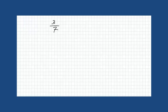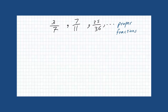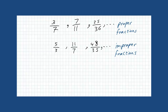Fractions like 3 over 7, 7 over 11, and 25 over 36 are called proper fractions because the numerator is less than the denominator. But fractions like 5 over 3, 11 over 7, and 48 over 35 are called improper fractions because the numerator is larger than the denominator. Numbers like 2 and 1 third, 14 and 2 over 9, and 5 and 1 over 100 are called mixed numbers.